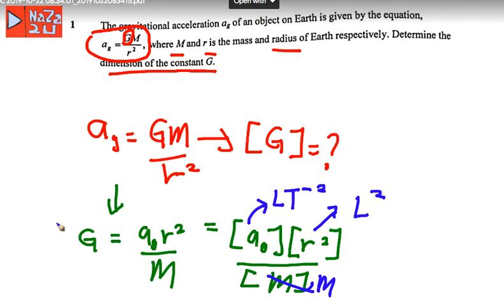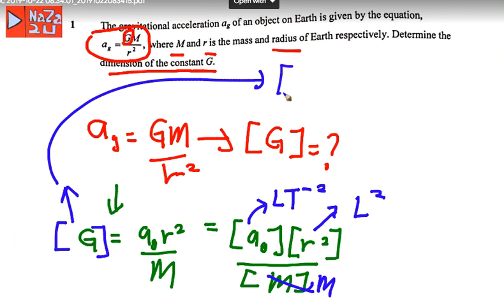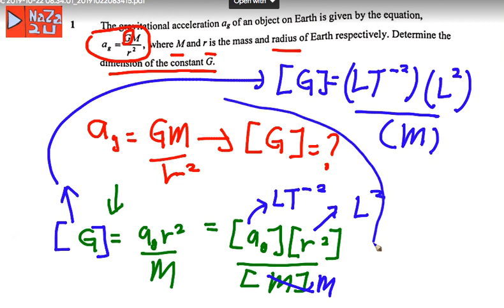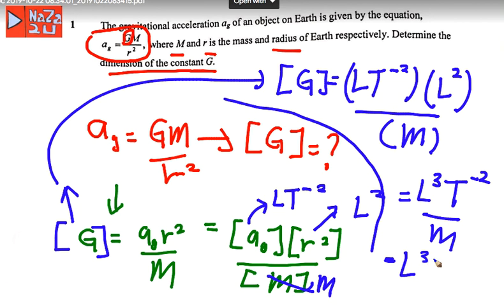So now, to find the dimension of G: the dimension of G equals the dimension of a, which is LT⁻², multiplied by L squared for r squared, divided by M. This gives L times L squared equal to L³, so the dimension of G is L³ T⁻² M⁻¹. This is the dimension of the constant G. Thank you.